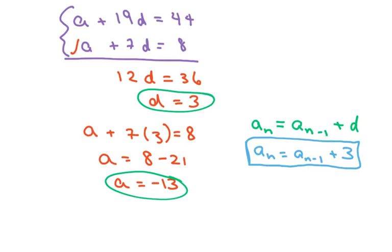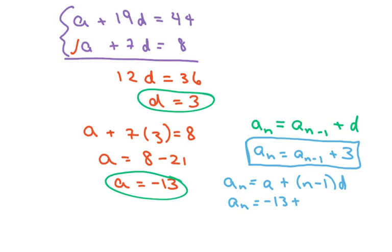Because it's just adding 3 to each number. Now our nth term: we're going to use a sub n equals a sub 1 plus n minus 1 times d. I'm just going to plug in my a and d, so that's a sub n equals negative 13 plus n minus 1 times d, and my d is 3.